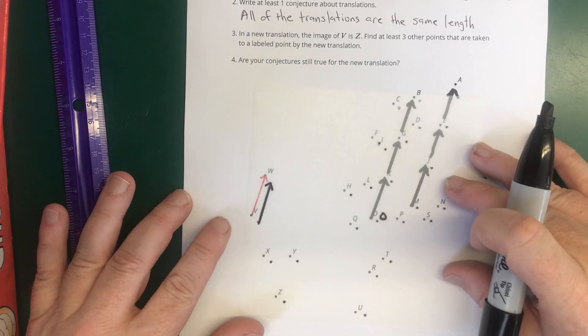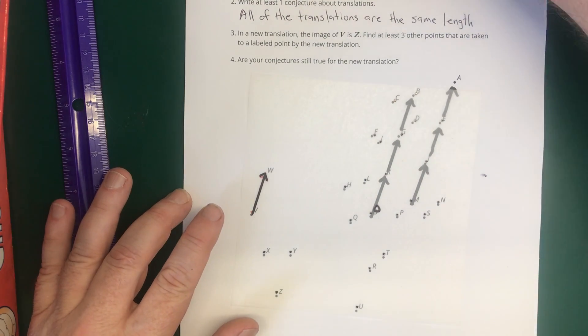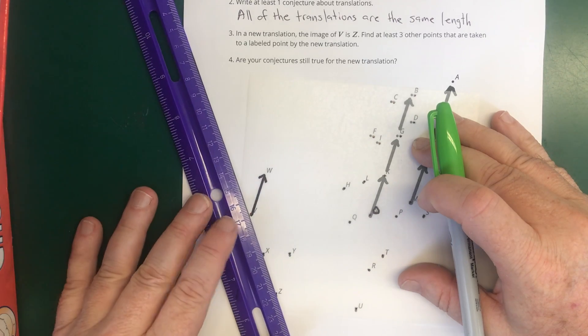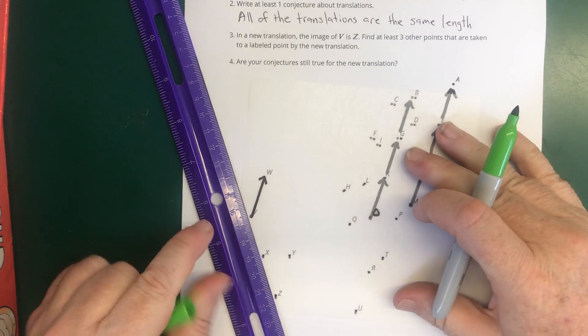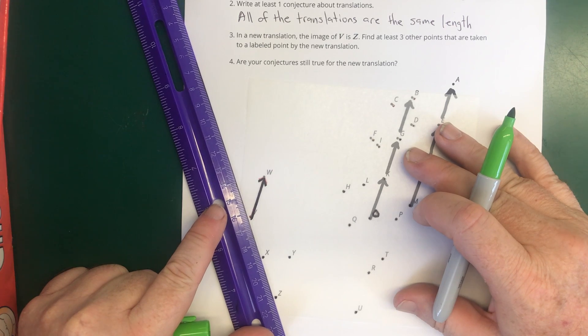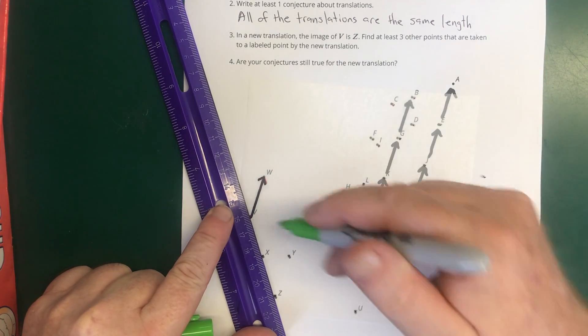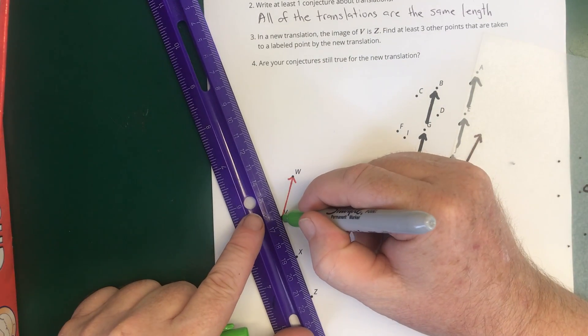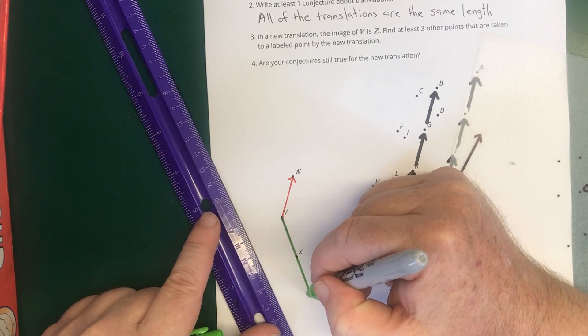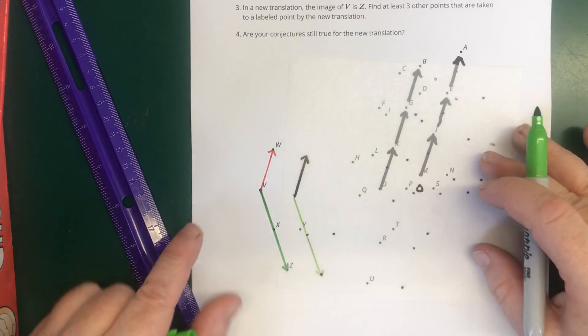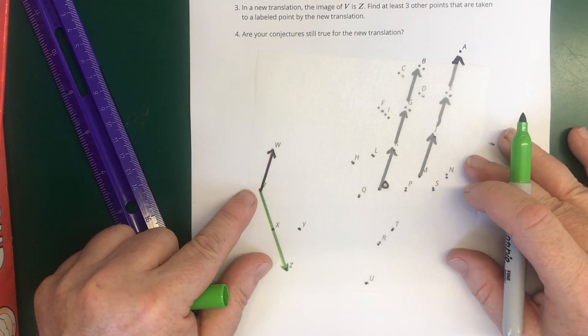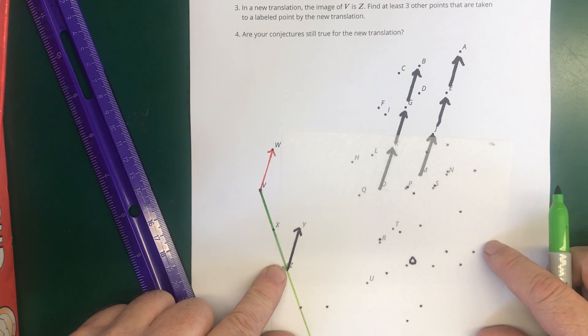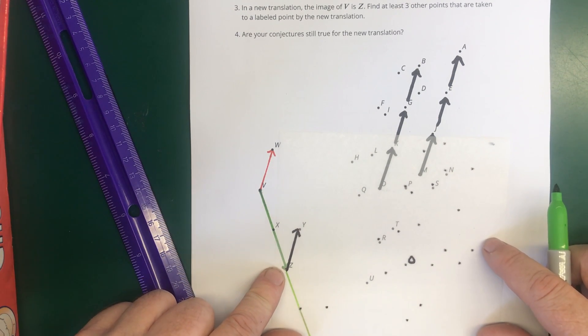For the second part of the problem, we're going to do the same thing. But this time, V moves down to Z. So I'm going to draw an arrow from V to Z. And I'll draw that here as well. So then we're going to translate from V down to Z without twisting. And we're going to look for points that wound up on other points.